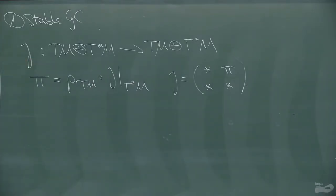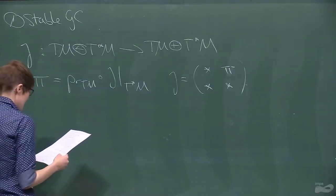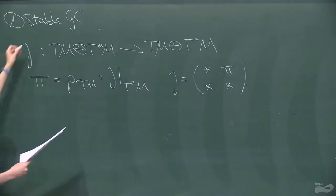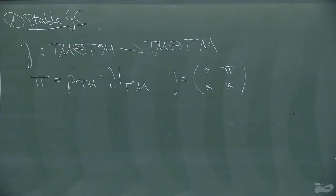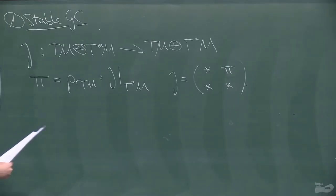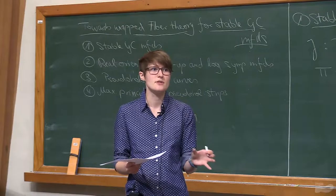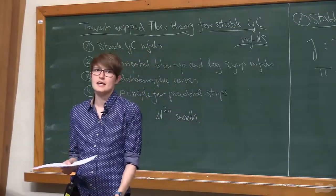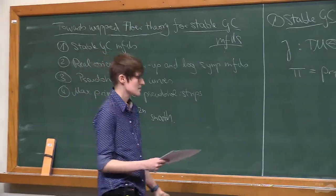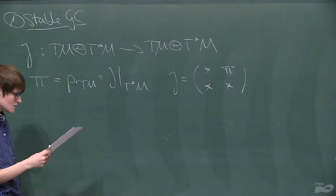I'm going to talk about stable generalized complex manifolds. These have the nice property that they are, up to gauge equivalence, still fully determined by their Poisson structure. They are a very important class of examples, not least because there are actually manifolds that admit stable generalized complex structures but admit neither complex nor symplectic structures. One can see from this that generalized complex geometry really applies to a larger class of manifolds.